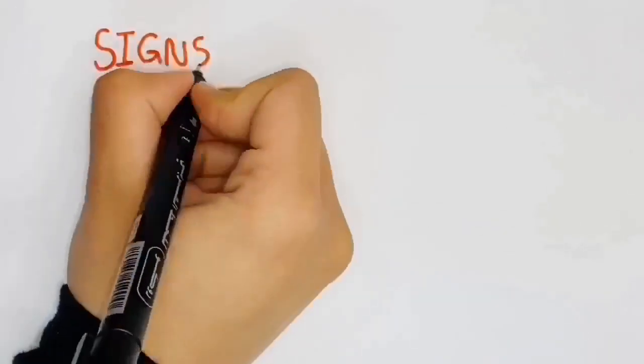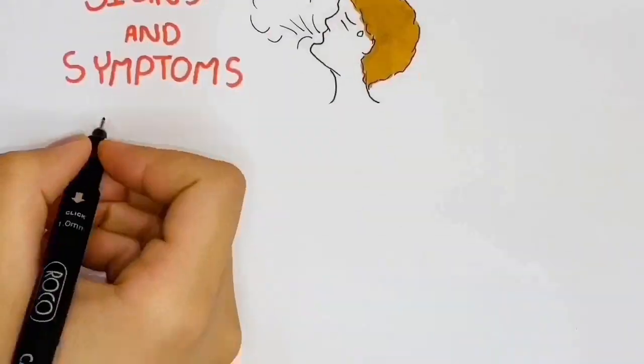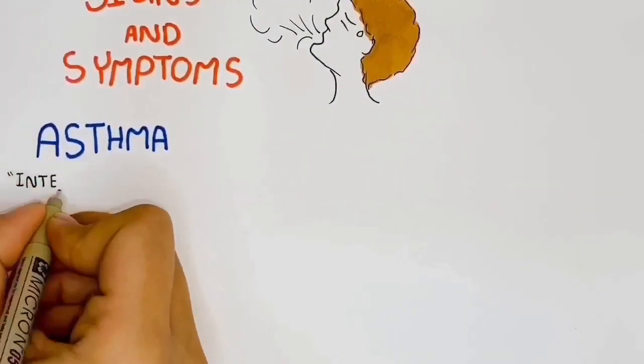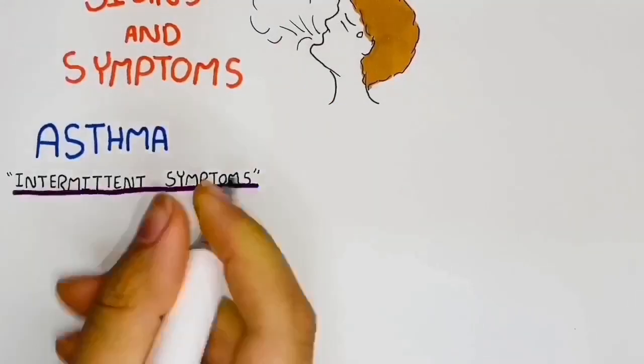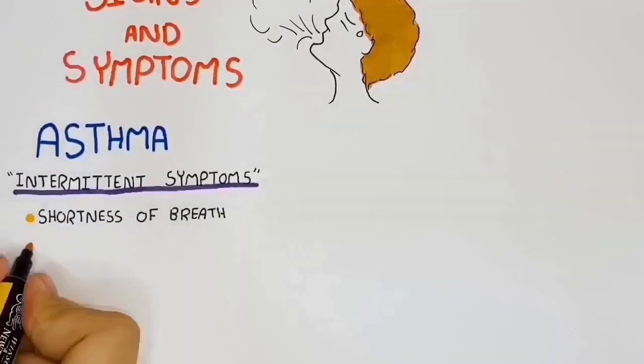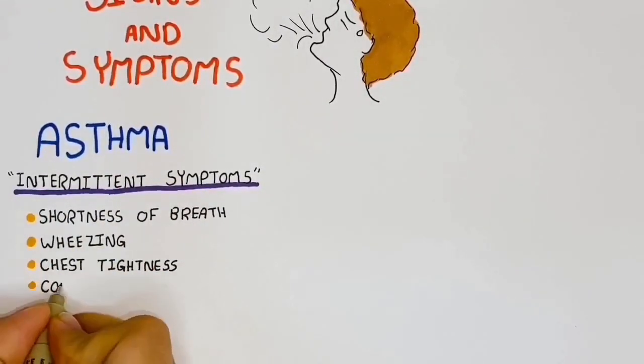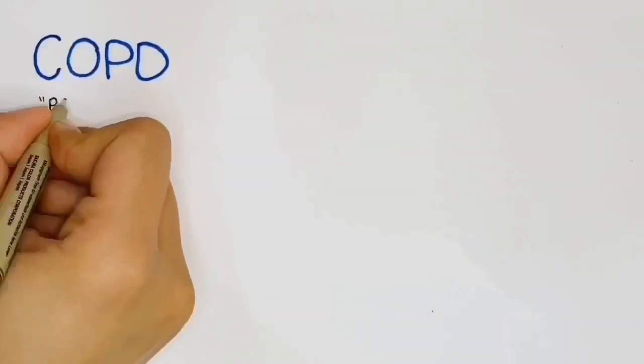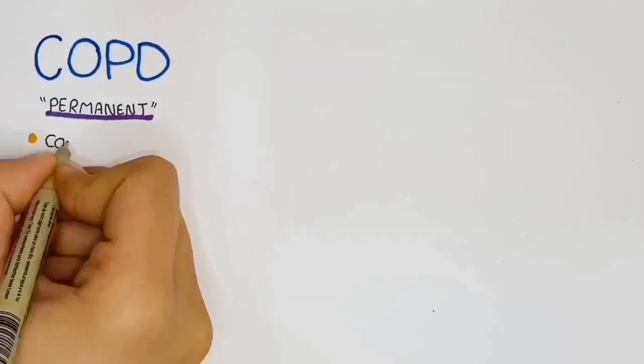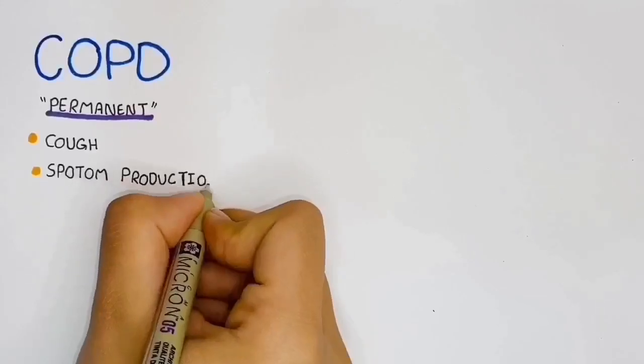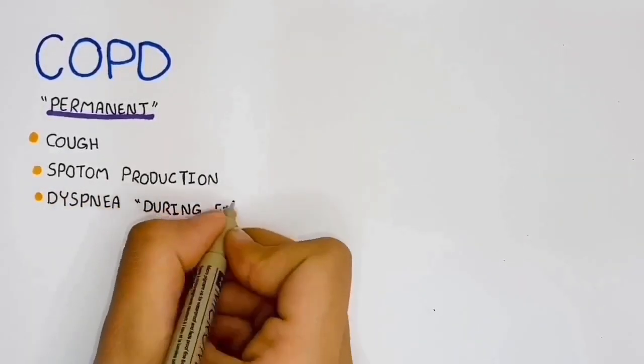Signs and symptoms. Asthma is characterized by intermittent symptoms including shortness of breath, wheezing, chest tightness, and cough, whereas COPD presents with permanent symptoms like cough, sputum production, and dyspnea during exertion.